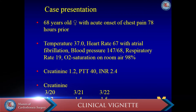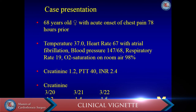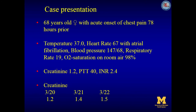A 68-year-old lady presents with acute onset of chest pain 78 hours prior. She presents with normal temperature, a heart rate of 67 beats per minute with atrial fibrillation, a blood pressure of 147 over 68, a respiratory rate of 19, and normal oxygen saturation. Her creatinine at presentation was 1.2, partial thromboplastin time was 40 seconds, and her INR was 2.4. In the days after presentation, she progressively developed oliguria and the creatinine was increasing towards 1.5, which raised the concern for renal malperfusion.